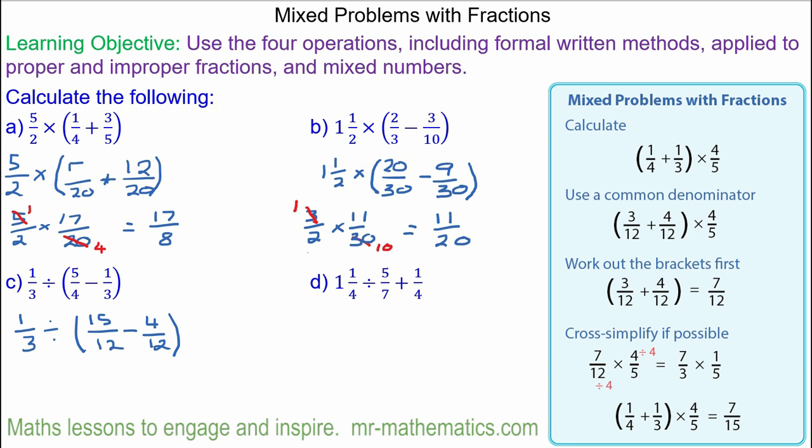So that would be one third. We'll change the divide to times, multiplied by. The answer to this is eleven twelfths. So it will be multiplied by twelve elevenths.